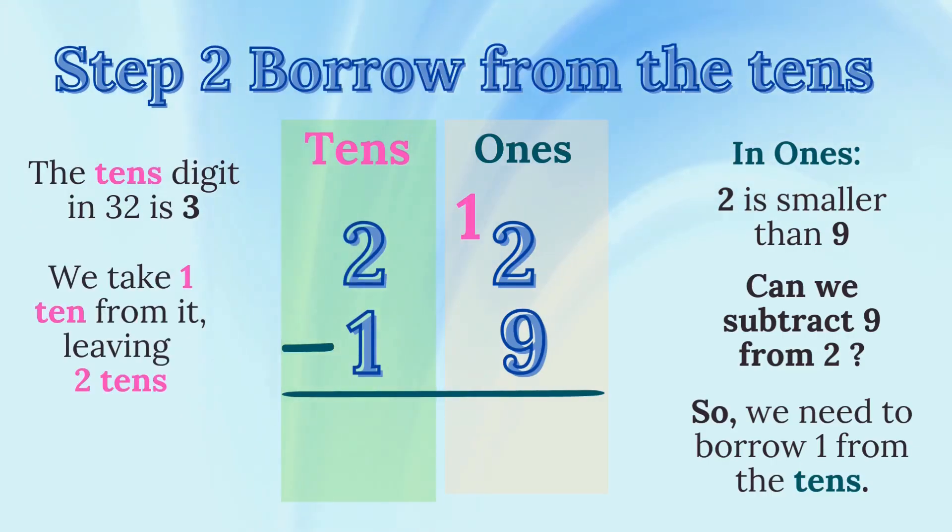Step 2. Borrow from the tens. The tens digit in 32 is 3. We take one ten from it, leaving two tens, and add ten ones to the ones place. Now, the ones place becomes 12 instead of 2.